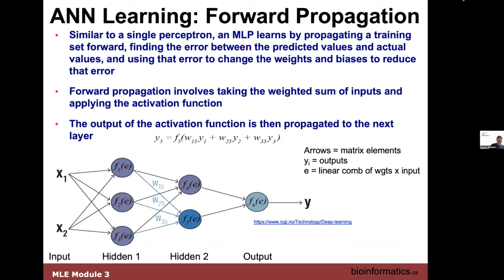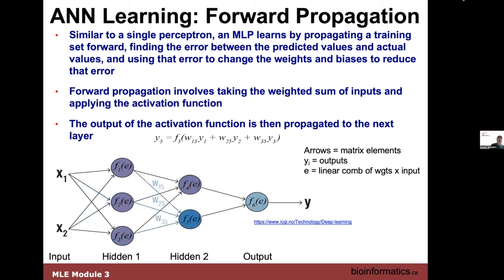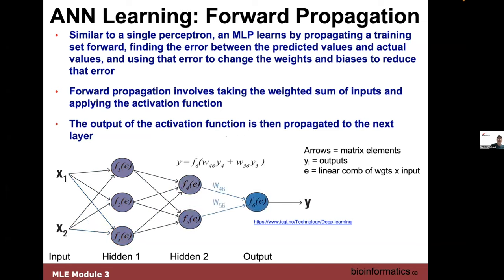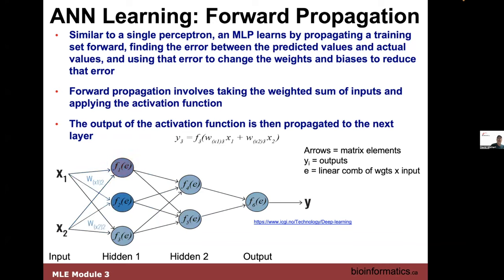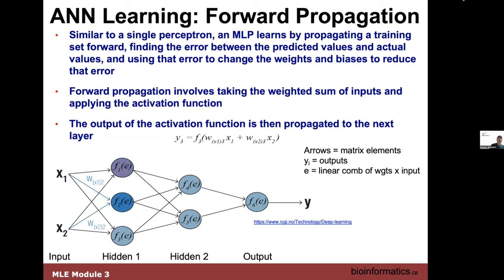The arrows have weights — those are the numbers you saw in the video — and they represent table and matrix elements. If you're familiar with a table or matrix, it'll be W15, W12 — those are positions. Y is the output. We're propagating data forward, finding the error between predicted and actual values, using the error to change weights and biases to reduce the error. Forward propagation takes weighted sums of inputs and applies the activation function — sigmoidal, softmax, or step — and the output of the activation function is then propagated to the next layer.